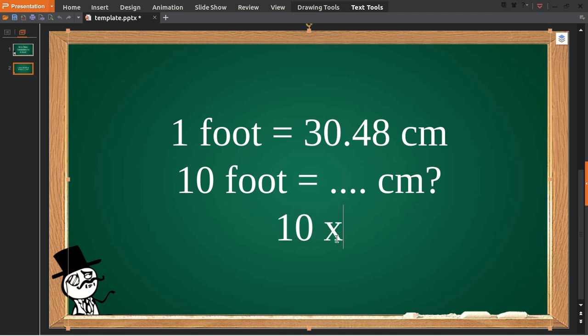and then multiply with 1 foot, which we have from here, and give it an equal sign. And then, because we have 10 on the left, we must have 10 on the right as well. And then we multiply it